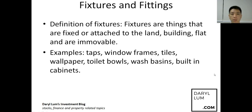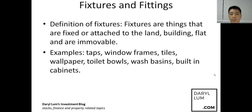Okay, so what are fixtures? The definition of fixtures: fixtures are things that are fixed or attached to the land, building, or flat and are immovable. Examples are taps, window frames, tiles, wallpaper, toilet bowls, wash basins, built-in cabinets. So these are fixtures — things that are fixed to the property.